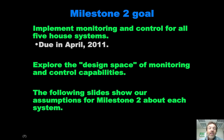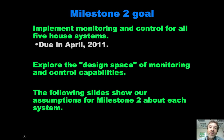For Milestone 2, our goal is to implement one particular set of monitoring and control systems for all five house systems. We can't do it on the real house, of course, but one of the advantages of doing software is that we can build a simulator that can act as if the real house had all of these monitoring and control systems. That enables us to see what capabilities we could implement given that particular set of systems. I want to go through with all of you the monitoring and control systems selected for Milestone 2, and then we can have an ongoing conversation about what we really want for the house by October.